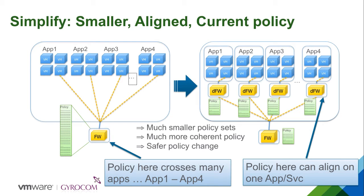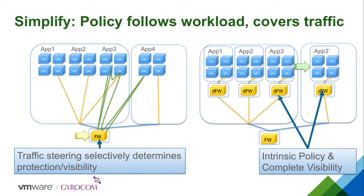Further simplification comes from intrinsic visibility into all east-west traffic. Traditionally, traffic had to be hairpinned from inside the data center out to a protection locus and then re-inserted into the application flow — and when applications or workloads moved, traffic had to be rerouted with hairpinning managed independently. With micro-segmentation, both the protection and the workload move in synchrony, so with one set of configuration the protection continuously follows the workload at any placement in the data center.